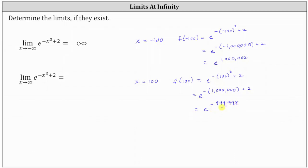Writing this using a positive exponent, this is equal to one divided by e raised to the power of positive 999,998. If we have positive one over a very large denominator, that's a very small value, very close to zero. As x approaches positive infinity, the values will get closer and closer to zero, which is why the limit of the exponential function as x approaches infinity is equal to zero.